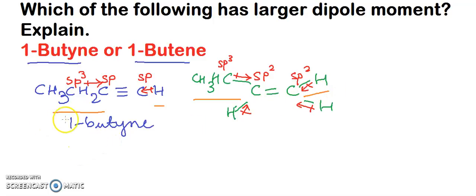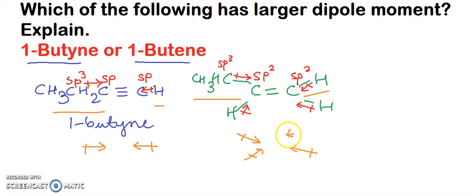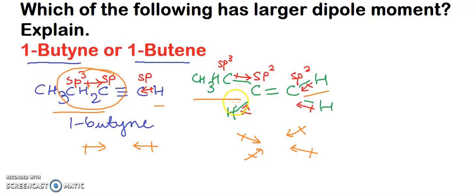These dipole moments oppose each other — in 1-butyne the dipole moment is in one direction, and in 1-butene in another direction, so there is opposition of dipole moments in both compounds. Now, since an SP hybridized carbon atom is more electronegative than an SP2 hybridized carbon atom, the dipole moment of the CH3–CH2C bond in 1-butyne is more than that of the CH3–CHC bond in 1-butene. Therefore, the dipole moment of 1-butyne is more than that of 1-butene.